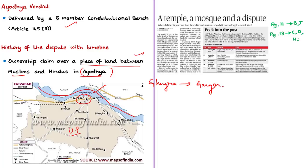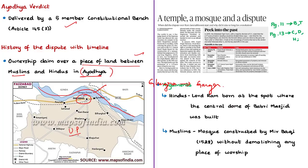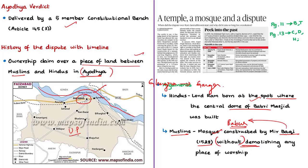The disputed property is of high importance to both communities. The Hindu community claims it as the birthplace of Lord Rama, believed to be an incarnation of Lord Vishnu. The Muslim community claims it as the site of the historic Babri Masjid, built by the first Mughal emperor Babur. Hindus argued that Lord Rama was born at the spot where the central dome of the mosque was built, while Muslims argued the mosque was constructed in 1528 by Mir Baqi, the commander of Babur's army, without demolishing any place of worship.